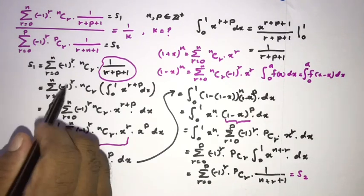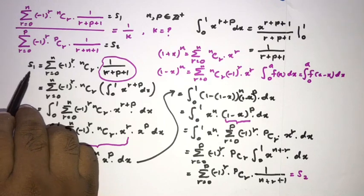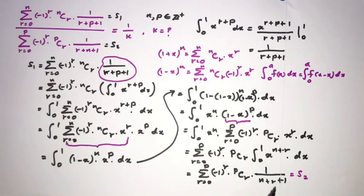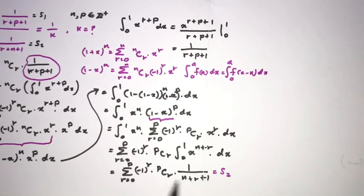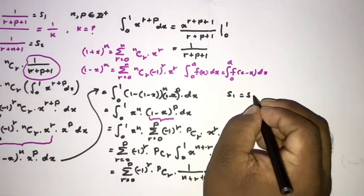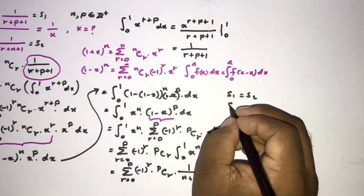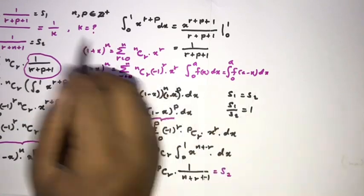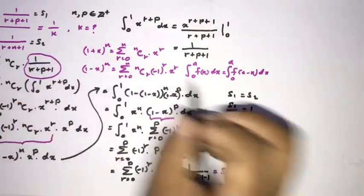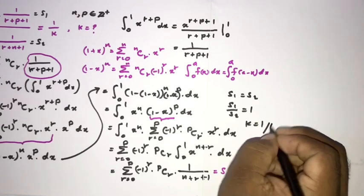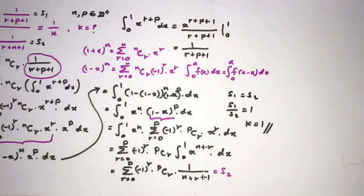This result is exactly equal to our second series S2. So we started with S1, transformed it step by step, and arrived at S2. Therefore S1 equals S2, which means S1 over S2 equals 1, and so k equals 1. That is the answer. Thank you for watching.